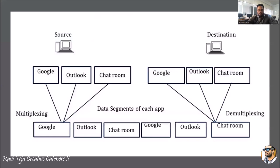Looking at the source and destination diagram, the source has three applications: Google, Outlook, and a chatroom. Once multiplexing has been done, all the data related to the three applications are combined together and transmitted to the receiving or destination end as a single signal.